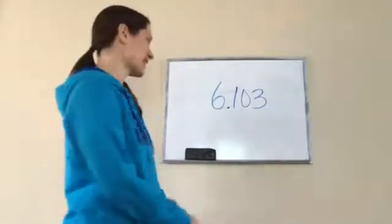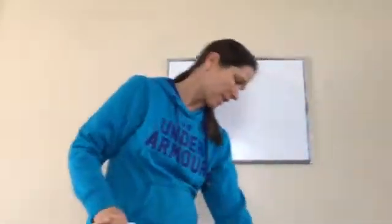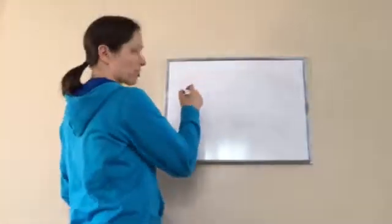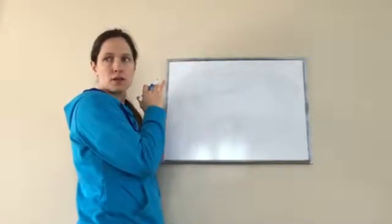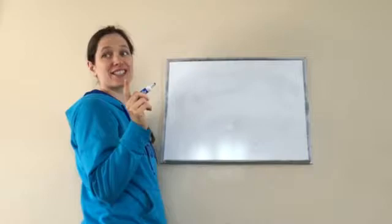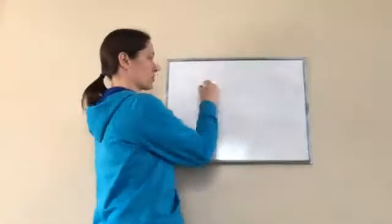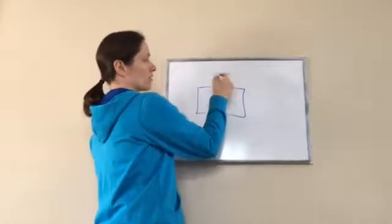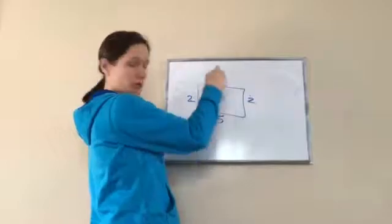Okay, sixth grade lesson 103. This is on the perimeter of complex shapes. Now what is perimeter? The distance around an object. Very good, the distance around a shape. So if I had a rectangle, 5 plus 2 plus 5 plus 2, we'd add up all of these to get the perimeter, right?